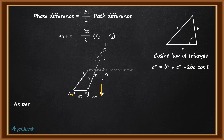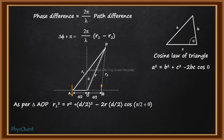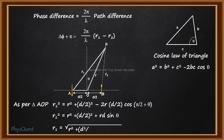Considering triangle AOP and using the cosine law: r1² = r² + (d/2)² − 2r(d/2) cos(π/2 + θ). Since cos(π/2 + θ) = −sin θ, this gives r1² = r² + (d/2)² + rd sin θ. Therefore r1 = √(r² + d²/4 + rd sin θ).